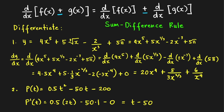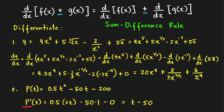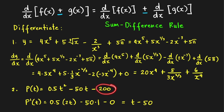Last problem: if p of t equals 0.5t squared minus 50t minus 200 — think of this as a profit function — then differentiating, p prime of t equals: copy 0.5 times the derivative of t squared, which is 2t; minus 50 times the derivative of t, which is 1; minus the derivative of a constant, which is 0. In simplified form, p prime of t equals t minus 50.